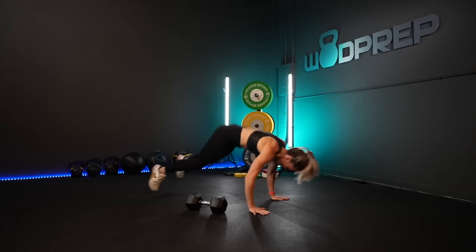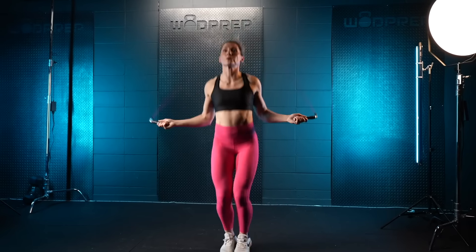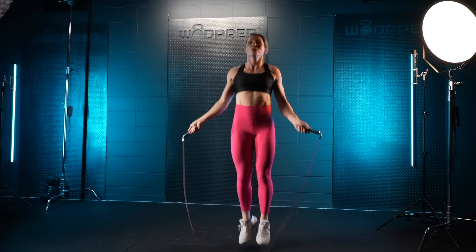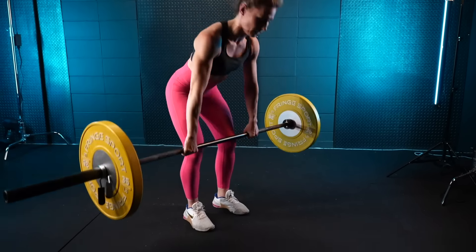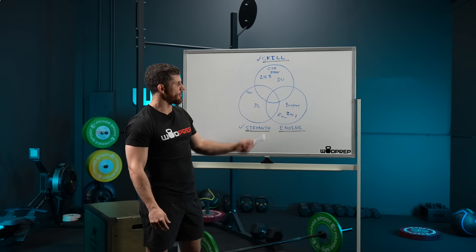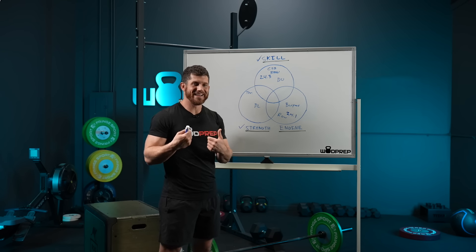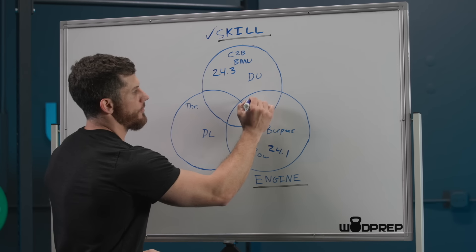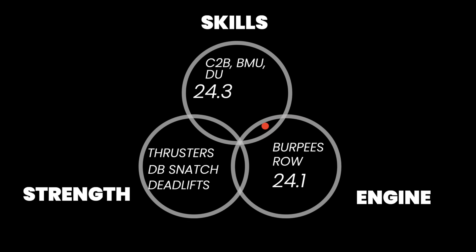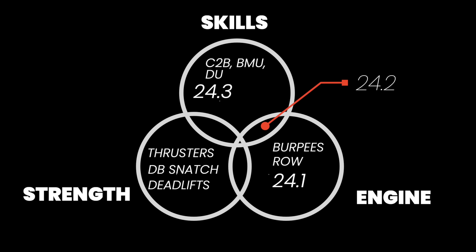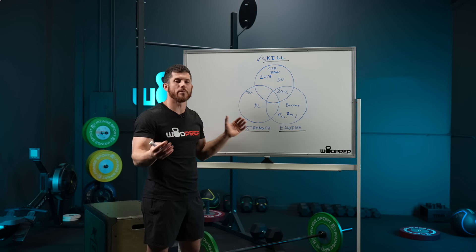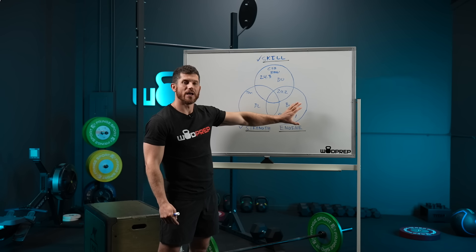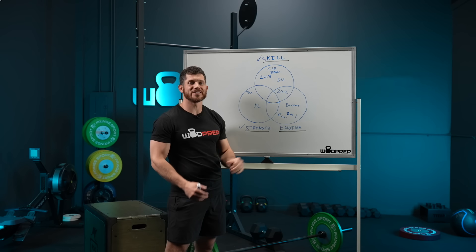And then we have 24.2, which was rowing, deadlifts, double-unders. Okay, double-unders, very much a skill component. Deadlifts, very much a strength component. And row, very much an engine component. Where would you place, if you had to put it anywhere, what would it be? 24.2. Probably, if I had to say what it truly biased, 24.2 was probably here. And that's because the strength was not enough of a limiter for it to be a true strength workout. It was heavily biased to, did you have double-unders? And could you keep up a pace on the row and the deadlifts and the double-unders combined over 20 minutes? That shows a big engine. So I'd say this was in the overlap of skill and engine.